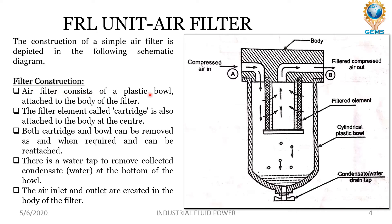Air filter consists of a plastic bowl attached to the body of the filter. The filter element called cartridge is also attached to the body at the center. This is the plastic bowl attached to the body of the filter. The filter element called cartridge is also attached to the body at the center. Both cartridge and bowl can be removed as and when required and can be reattached.